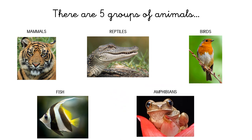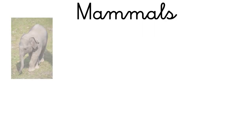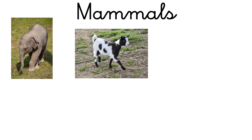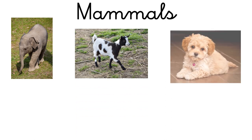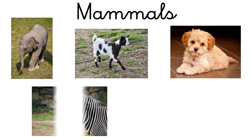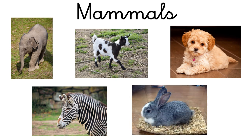Now we are going to see some examples of animals in each group. The first group is mammals. Some examples of mammals are the elephant, the goat, the dog, the zebra, and the rabbit.